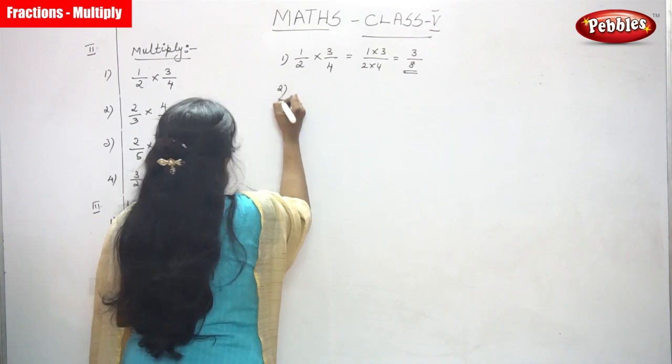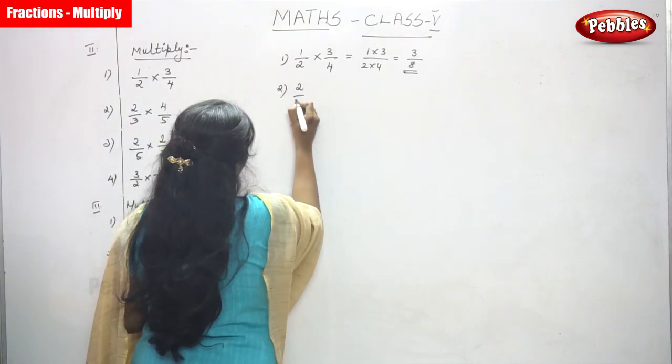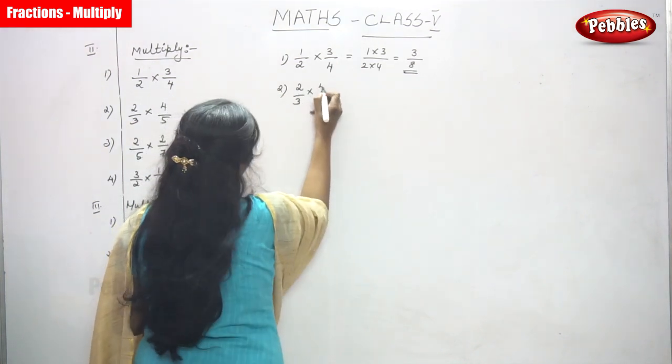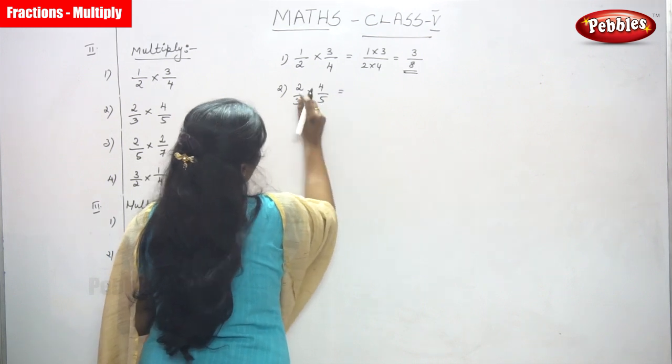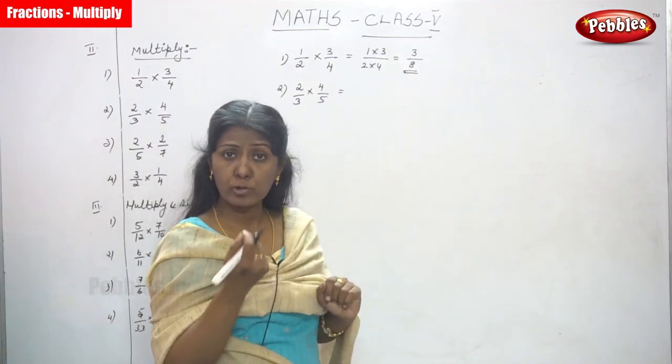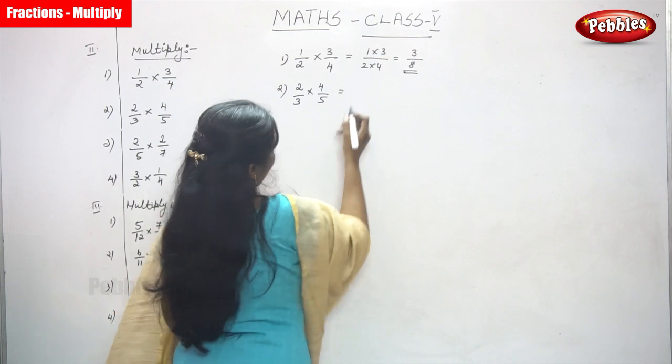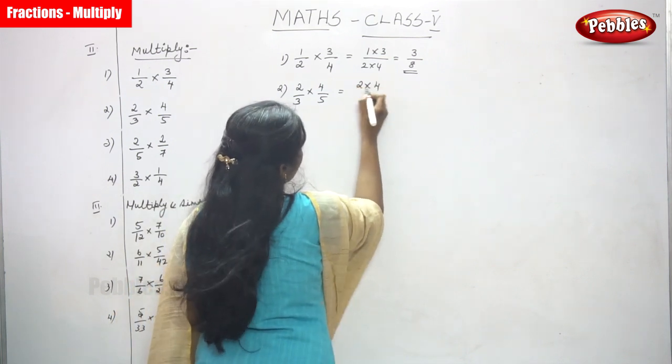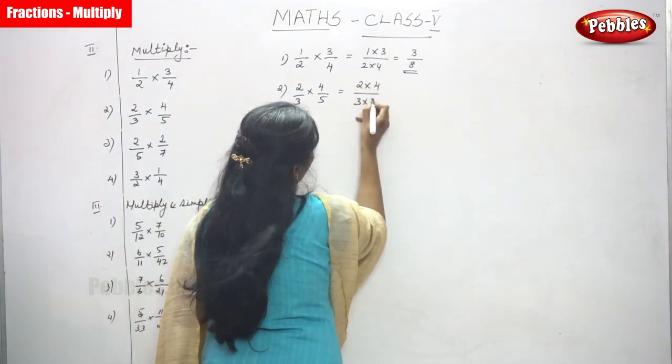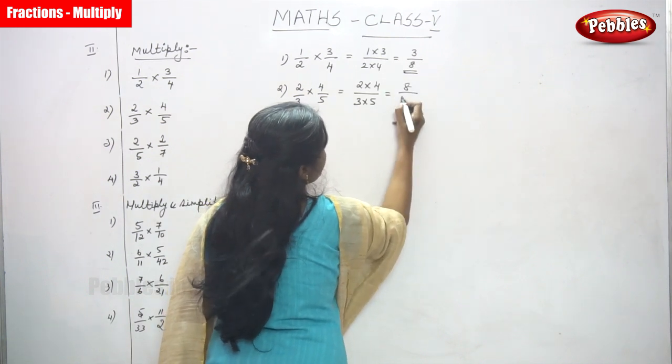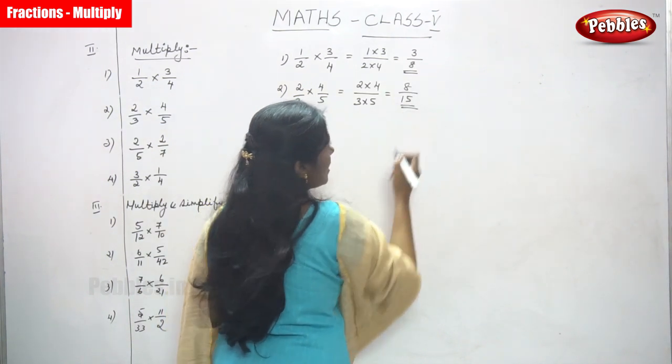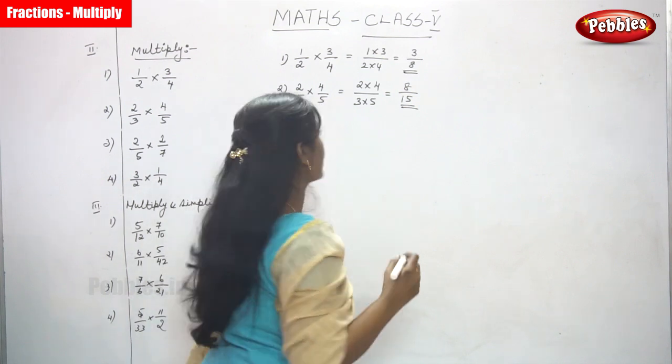Next sum. 2 by 3 into 4 by 5. So, 2 by 3 is a fraction and 4 by 5 also a fraction. Both are proper fractions. So, 2 into 4 divided by 3 into 5. So, 2 into 4, 8. So, 3 into 5, you can get 15. So, answer is 8 by 15 is the answer.